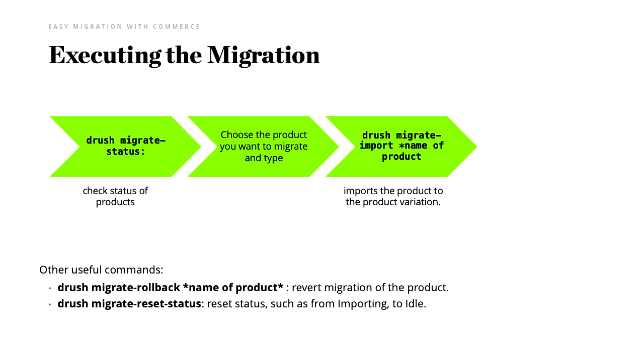Executing the migration is simple. You just run drush migrate:status to check the status, choose the product type you want to migrate, and run drush migrate:import. There are also useful commands like rollback and migrate reset-status. I find migrate reset-status very important because if you get stuck and the status is stuck in 'importing', you can just reset it back to idle. When you open the product variations, you can see the list of items.